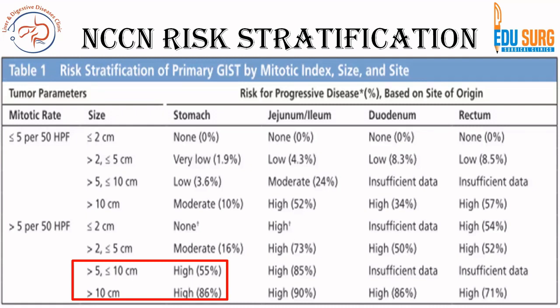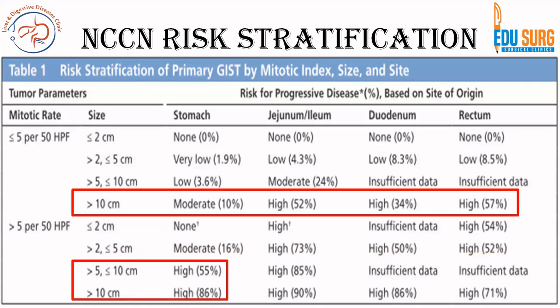To summarize the risk stratification: 5/5 for stomach or 10 cm is high risk. For other organs such as small intestine and rectum, it is 2/5 or 10 cm or 10 mitoses. So remember: 5/5 for stomach, 10 cm or 10 mitoses for any GIST, and 2/5 for small intestine and rectum.